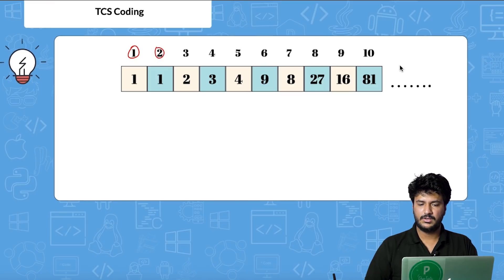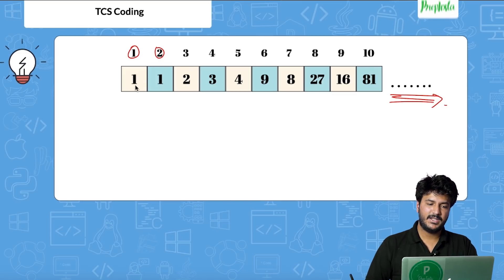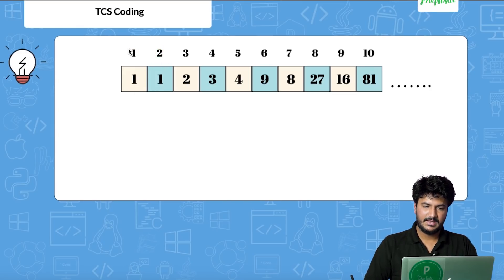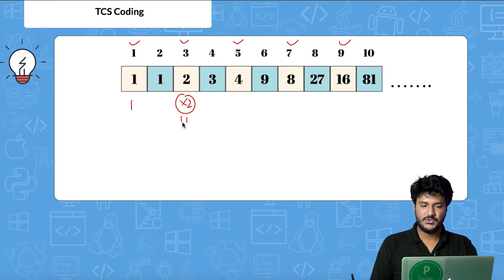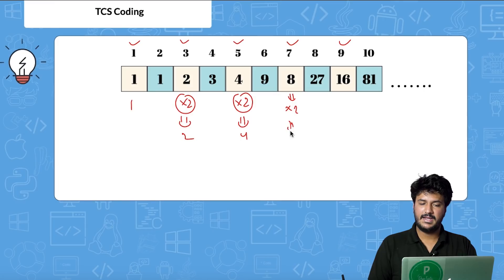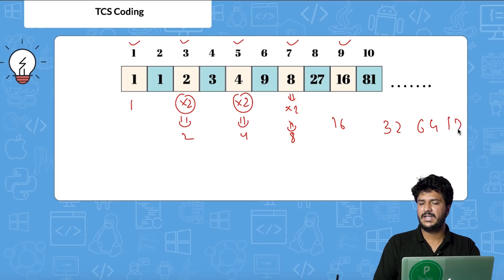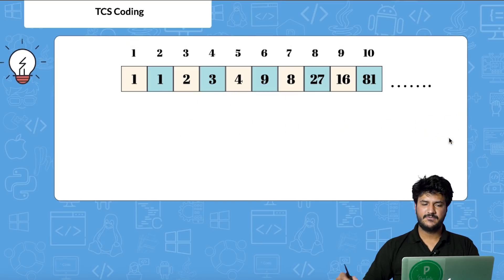Looking at the odd positions only: the first number is 1, then for the next odd position you multiply by 2 to get 2, then multiply by 2 again to get 4, then 8, then 16, then 32, then 64, 128, and so on. So it's a sequence of powers of 2.